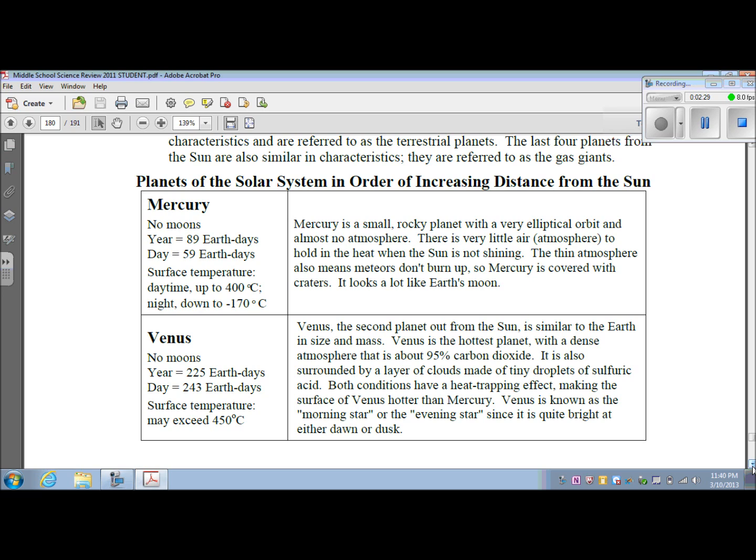The next planet is Venus. Venus has no moons. Its year is 225 Earth days. Its day is 243 Earth days. The surface temperature may exceed 450 degrees Celsius. Venus, the second planet from the Sun, is similar to Earth in size and mass. Venus is the hottest planet with a dense atmosphere that is about 95% carbon dioxide. It is also surrounded by a layer of clouds made of tiny droplets of sulfuric acid. Both conditions have a heat-trapping effect, making the surface of Venus hotter than Mercury. Venus is known as the morning star or the evening star since it is quite bright at either dawn or dusk.